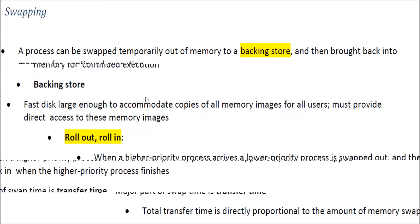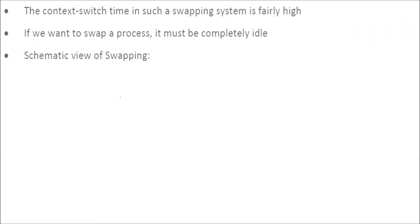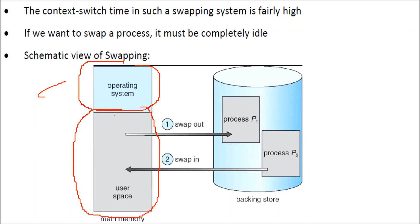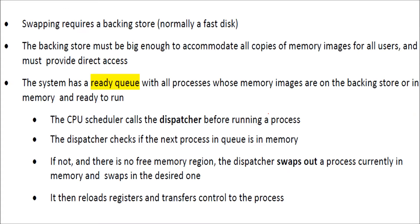Now we have swapping. I'll show you diagrams. This is your main memory — some place is taken by the operating system and other place is used by the users, that is user space. Swapping in and swapping out is simply: you take out some processes which are idle, low priority processes, and bring in high priority processes that you want executed into main memory.